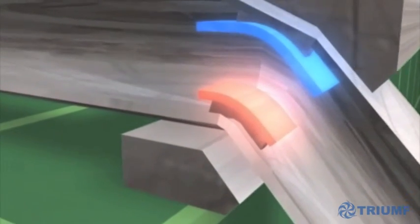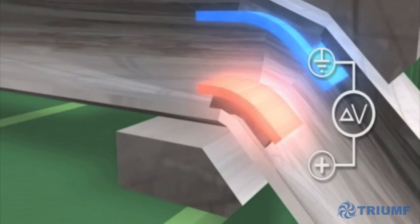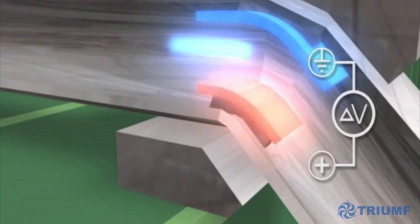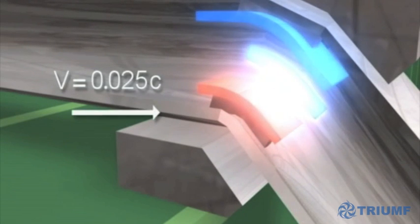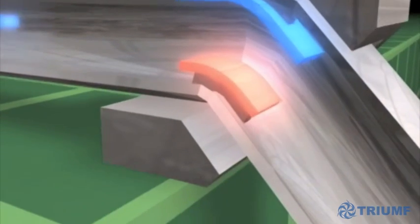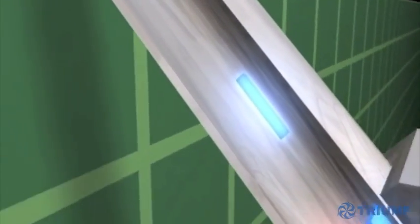In the injector line, electrostatic fields are used to steer the negative hydrogen ion beam, which is traveling at 2.5% the speed of light. At that velocity, the voltage on the electrostatic benders can be handled easily.